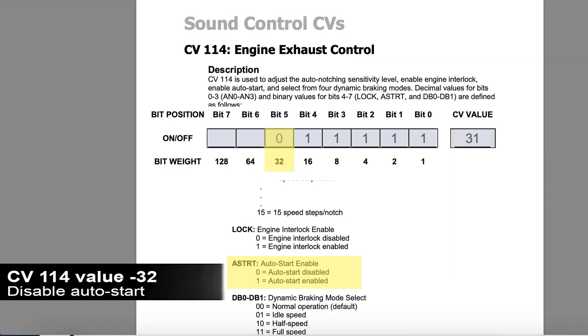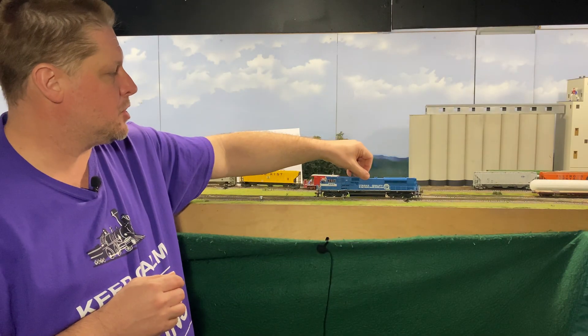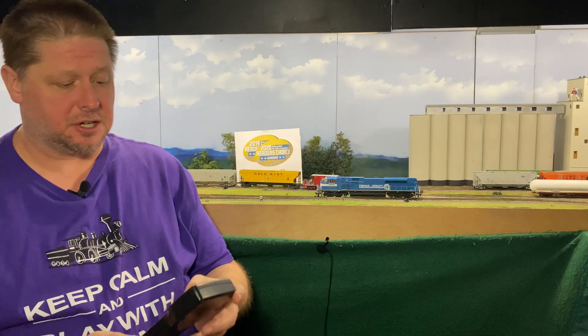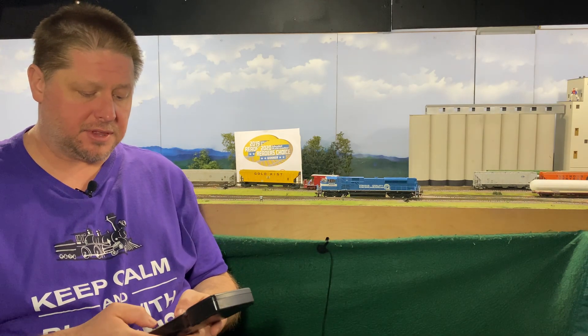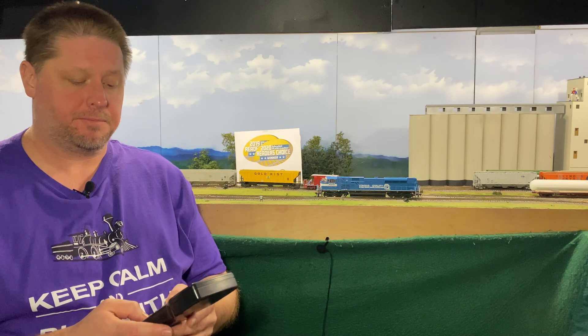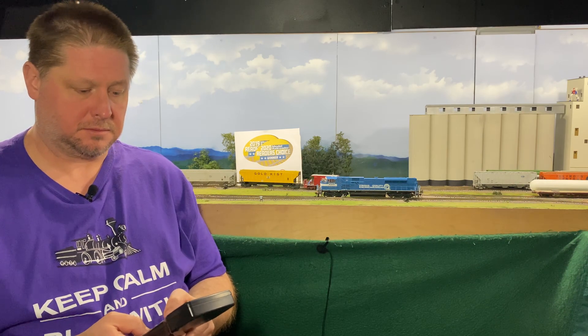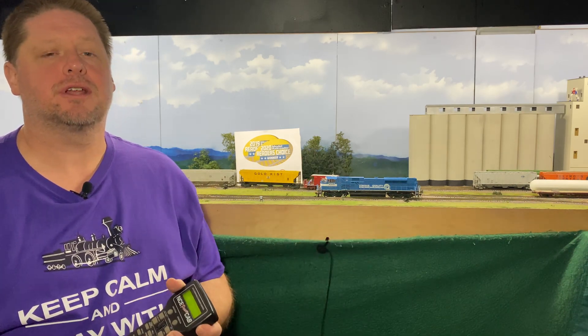But now when I disable the auto start bit — I'm going to take CV114 and program it to disable the auto start bit — now when I tip the locomotive over and set it back down, you can see the locomotive is not starting. It will not start up until I give it the startup sequence manually. And you can hear that it fires up.